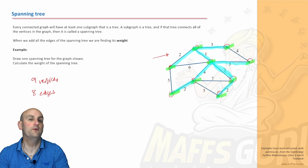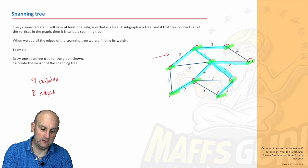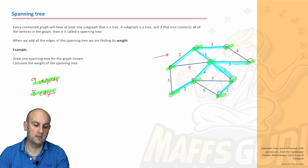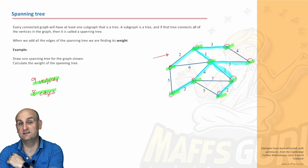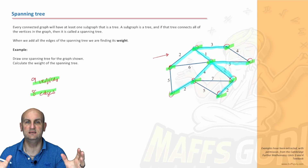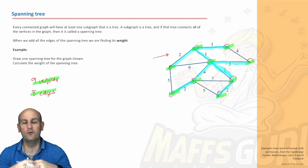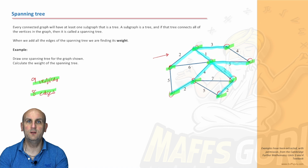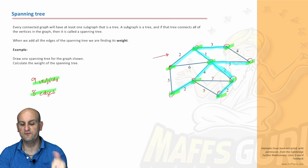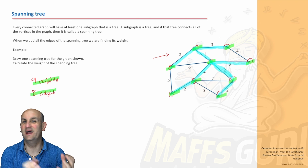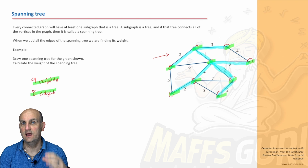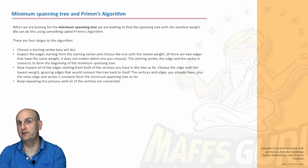There is an example of a spanning tree. Stop the video, print it out, and try to come up with another one. As long as the spanning tree has one less edge than vertices, you're good to go. Now we get to the idea of a minimum spanning tree — can we find the minimum distances between all points? This is important for computer networks, water flow, road planning, and efficiency.